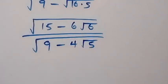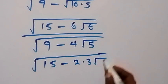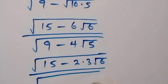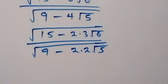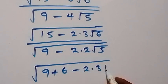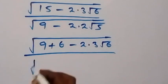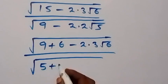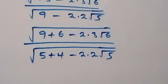Since root 36 is 6, we can write it as 2 times 3. So we have square root of 15 minus 2 times 3 times root 6, over square root of 9 minus 2 times 2 times root 5. From here we can equally separate 15 as 9 plus 6, so we have square root of 9 plus 6 minus 2 times 3 times root 6. Then divided by: 9 here we can separate as 5 plus 4, so we have square root of 5 plus 4 minus 2 times 2 times root 5.